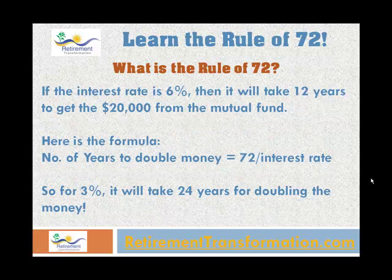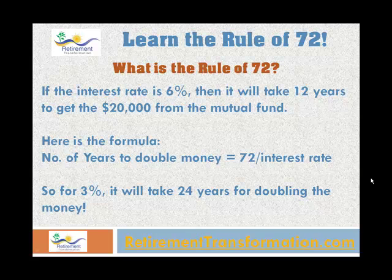If the interest rate is 6%, then it will take 12 years to get to $20,000 from the mutual fund. Here's the formula: number of years to double money equals 72 divided by the interest rate. In this case, 72 divided by 6 equals 12 years. That's why it takes 12 years to double the money.